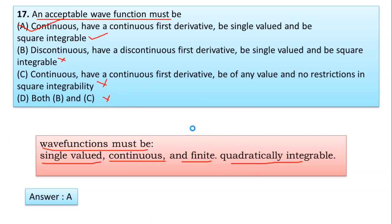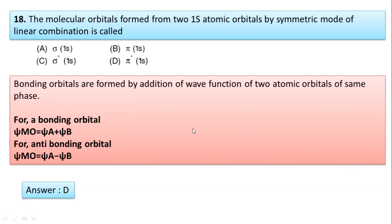Question number 18: The molecular orbitals formed from two 1s atomic orbitals by symmetric mode of linear combination is called—you take two 1s atomic orbitals and combine these two orbitals in a symmetric mode. The bonding orbitals are formed by the addition of wave function of two atomic orbitals of the same phase.